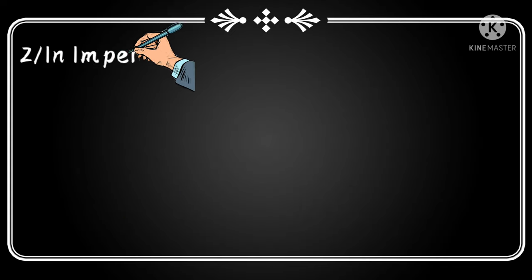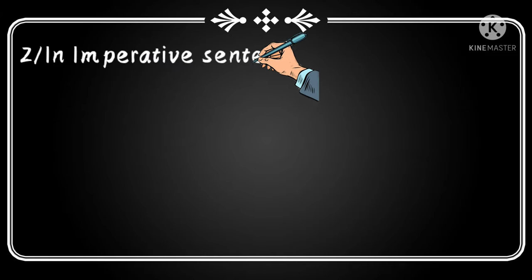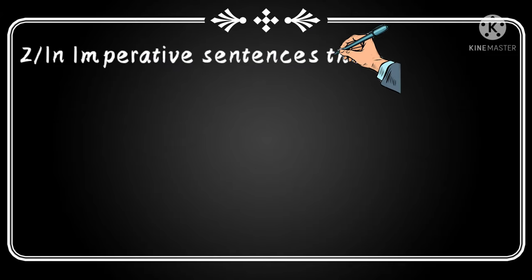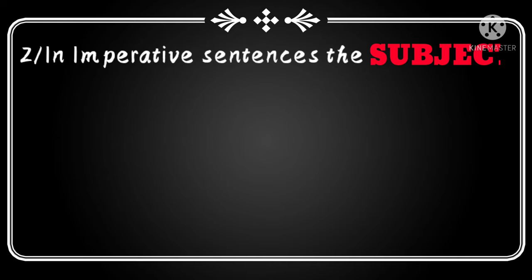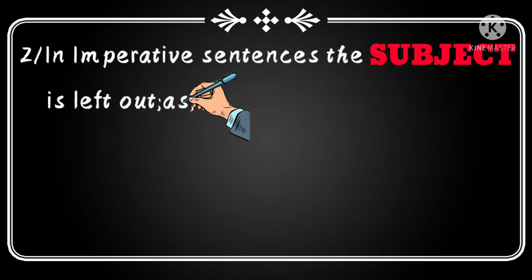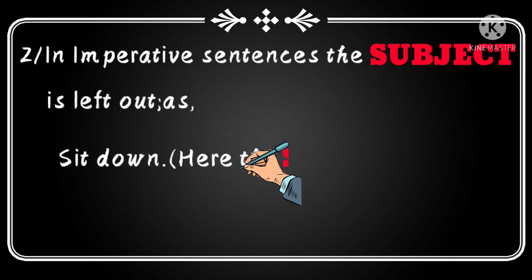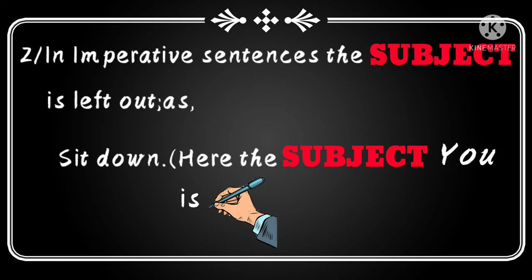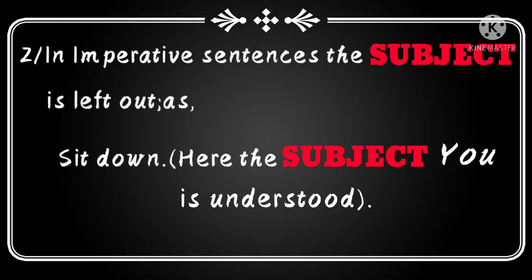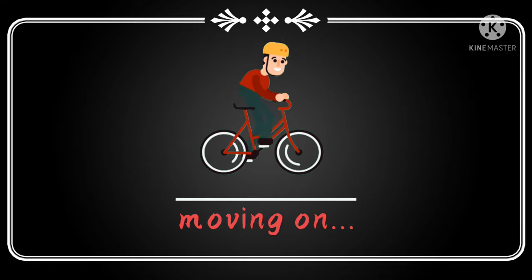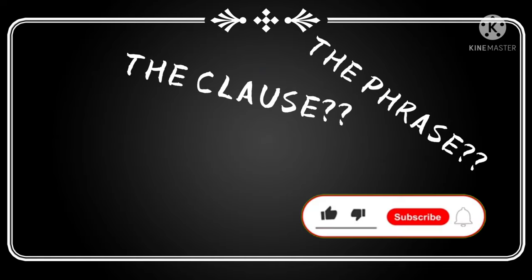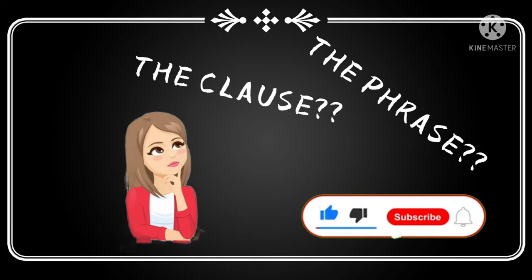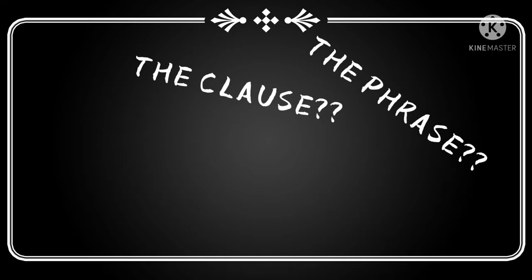Secondly, in imperative sentences the subject is left out, such as 'Sit down.' However, the subject 'you' is understood and need not be mentioned necessarily. Now moving on to the other concepts mentioned in the beginning of the video — the phrase and the clause. So what are these two? Let's get to them now.